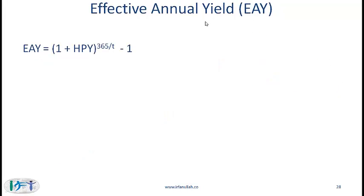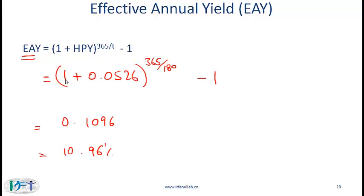The most precise measure is the effective annual yield, where we take 1 plus the holding period yield raised to the power of 365 over 180, minus 1. We are now compounding using an exponent, we use a 365-day year, and the return is based on the initial investment rather than the face value. So the effective annual yield does not have any of the three issues, and this number is also higher compared to both the bank discount yield and the money market yield.